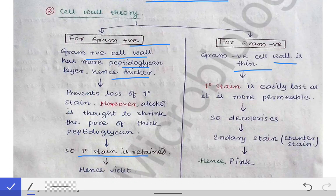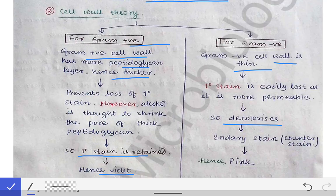In Gram-positive bacteria, the primary stain is retained in the cytoplasm and the bacteria appears violet even after decolorization and counter staining. In Gram-negative bacteria, the thin cell wall allows easy decolorization — the crystal violet-iodine complex is washed out — and when we add the counter stain safranin, the bacteria takes that stain and appears pink. This explains why Gram-negative bacteria appear pink and Gram-positive bacteria appear violet.